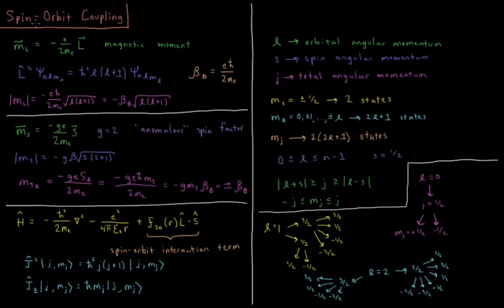So this is the basics of spin-orbit coupling. We have orbital angular momentum operators and eigenvalues, and spin angular momentum operators and eigenvalues. Those two combine due to spin-orbit coupling to give total angular momentum operators and eigenvalues. j ranges from l+s to |l−s|, and m_j goes from −j to +j. For an electron, s=1/2, so we get at most two possible values of j for a given electron in a given atomic orbital.